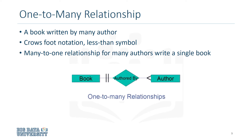In this case, we saw that more than one author can write a book. This can be represented with a different notation called crow's foot notation — in this case, a less than symbol. This indicates that one book entity is participating in more than one relationship in the relationship set. This could also be called a many-to-one relationship, in that many authors write a single book.